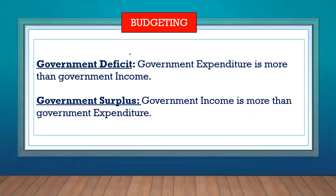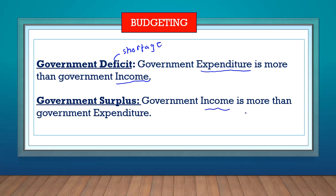The government deficit — the word deficit means shortage. If there's a government deficit, it means the government does not have enough; the expenditure is more than the income. The government might need to borrow money to cover the deficit so that all the needs of the country are met. A surplus is just the opposite: a government surplus means that income is more than expenditure, so the government has more than enough income to cover its expenditure.